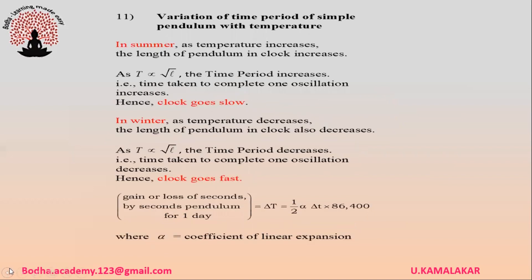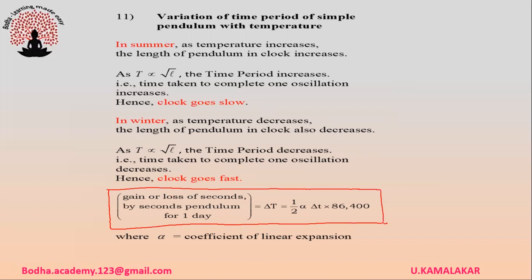Variation of time period with temperature. In summer, as temperature increases, the length of the seconds pendulum in a clock also increases. Since T is directly proportional to √l, the time period increases, meaning the time taken to complete one oscillation increases, so the clock goes slow. In winter, as temperature decreases, length decreases, time period decreases, and the clock goes fast. The gain or loss of seconds per day is (1/2)α·ΔT·86400 seconds, where α is the coefficient of linear expansion of the pendulum rod material.